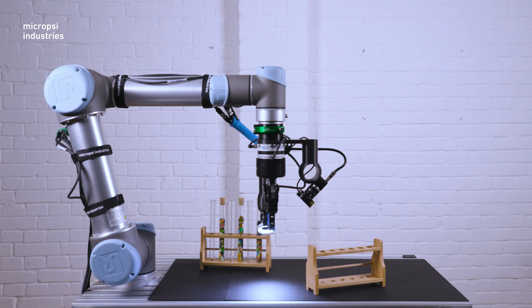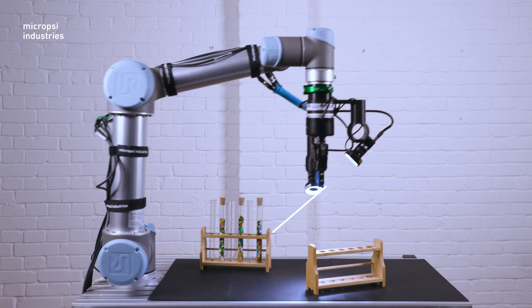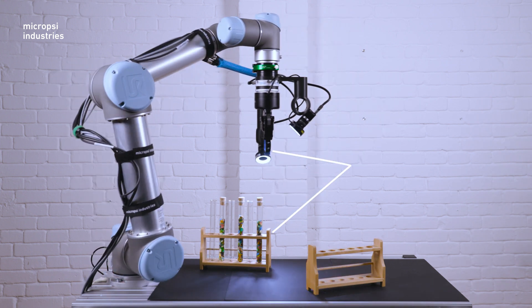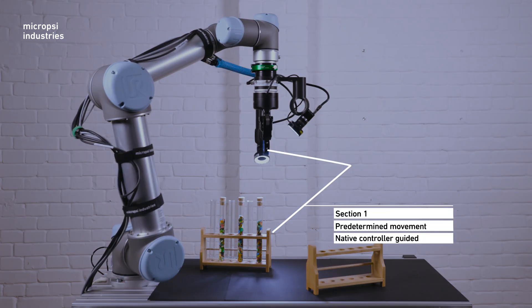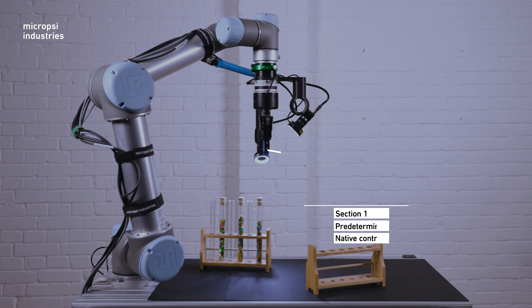The task breaks down like this. From a starting position, the robot approaches the first beaker. This is section 1. We can program the robot using its native controller to perform the simple movement.